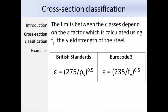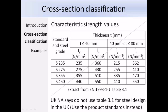The limits between the different classes depend on epsilon, which is calculated using the yield strength of the steel. For both BS 5950 and Eurocode 3 the equations are almost the same, except Eurocode 3 uses a base value of 235 — because S235 steel is regarded as the most widely used throughout Europe — whereas BS 5950 uses a base value of 275. Table 3.1 of Eurocode 3 contains values for yield strength and ultimate tensile strength for hot rolled steel, depending on steel grade, production standard, and nominal thickness.